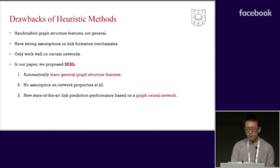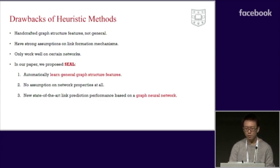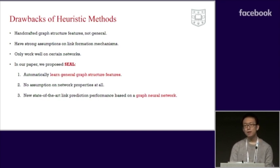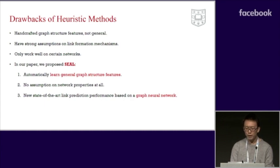Despite the success of heuristic methods, there are several drawbacks. Firstly, heuristic scores are handcrafted graph structure features; they are not able to capture the general graph structure features that might be useful for link prediction. Secondly, heuristic methods have strong assumptions on link formation mechanisms, thus only working well on certain networks. In this paper, we propose the new link prediction framework SEAL, which overcomes the above drawbacks by automatically learning general graph structure features based on a graph neural network.